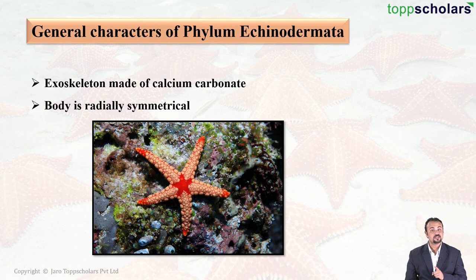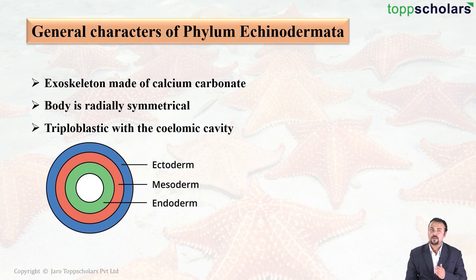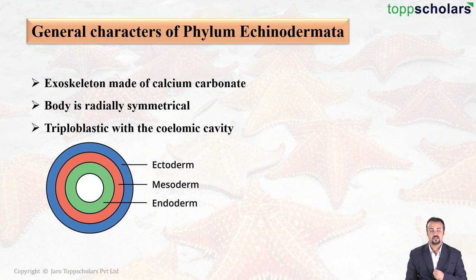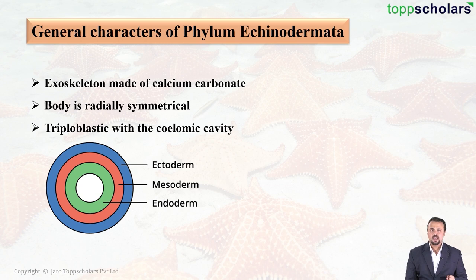These animals are triploblastic with a coelomic cavity. Do you see the three germ layers in this image — ectoderm, mesoderm, and endoderm? Animals that are triploblastic have all three germ layers in their embryos. These animals also have a true coelom, meaning a coelom that is completely enclosed by mesoderm.